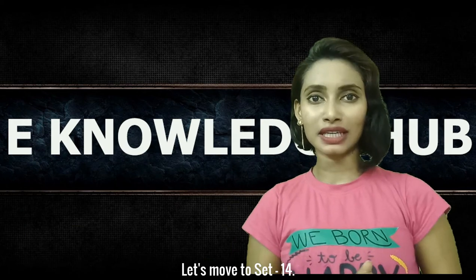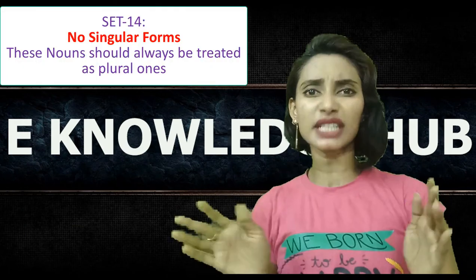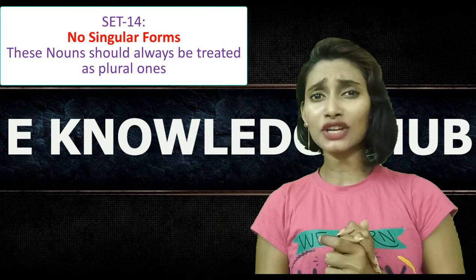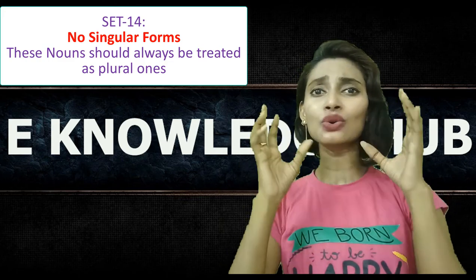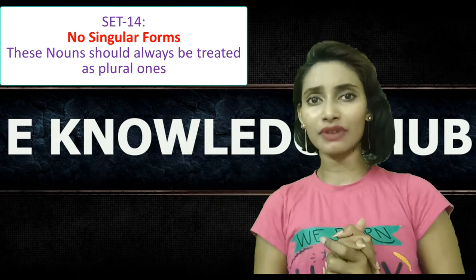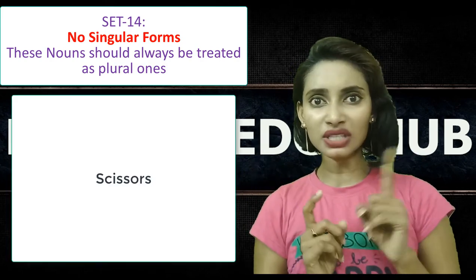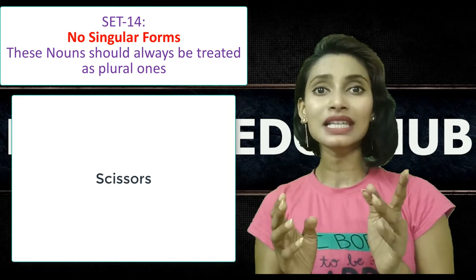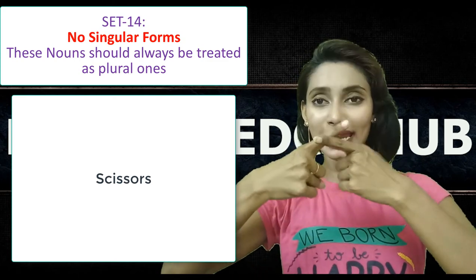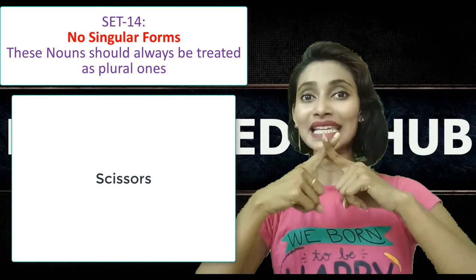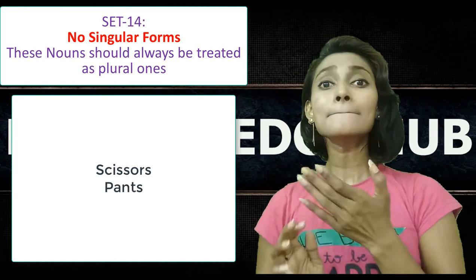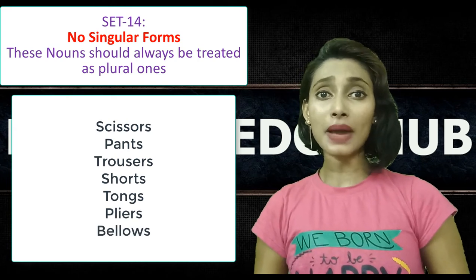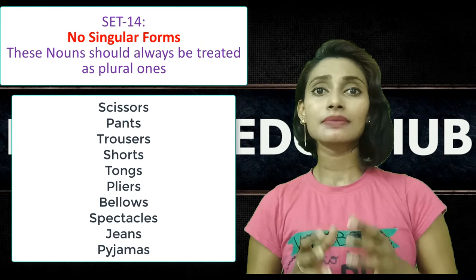Let's move to set 14. In set 14, there are words which have no singular forms. If you use them in singular, there is no sense because they generally have two parts joined together. For example, scissors — there is no singular word 'scissor.' It should always be scissors because scissors have two blades joined at one junction. Similarly: pants, trousers, shorts, thumbs, pliers, bellows, spectacles, jeans, pyjamas, pincers.